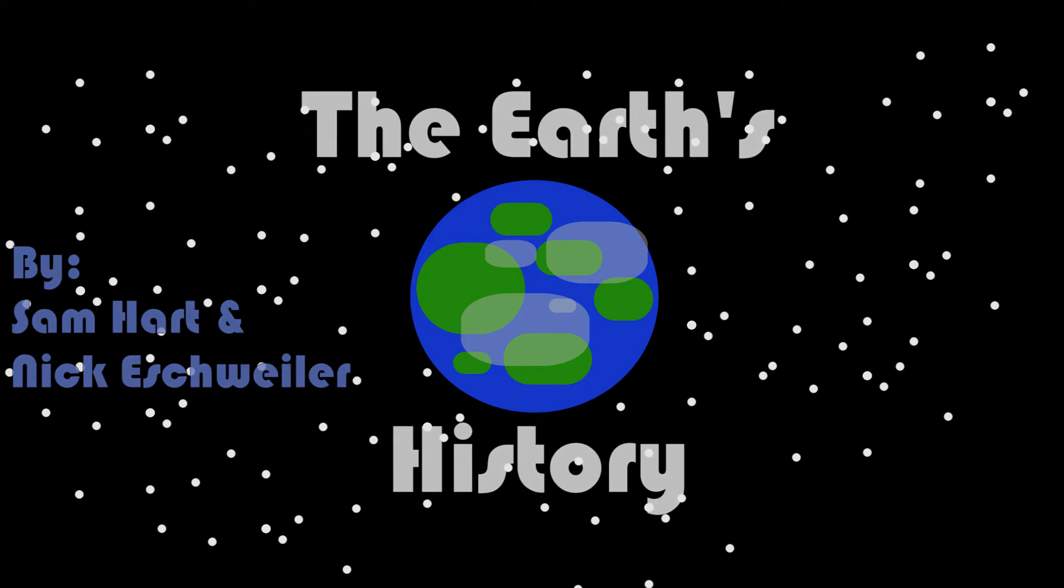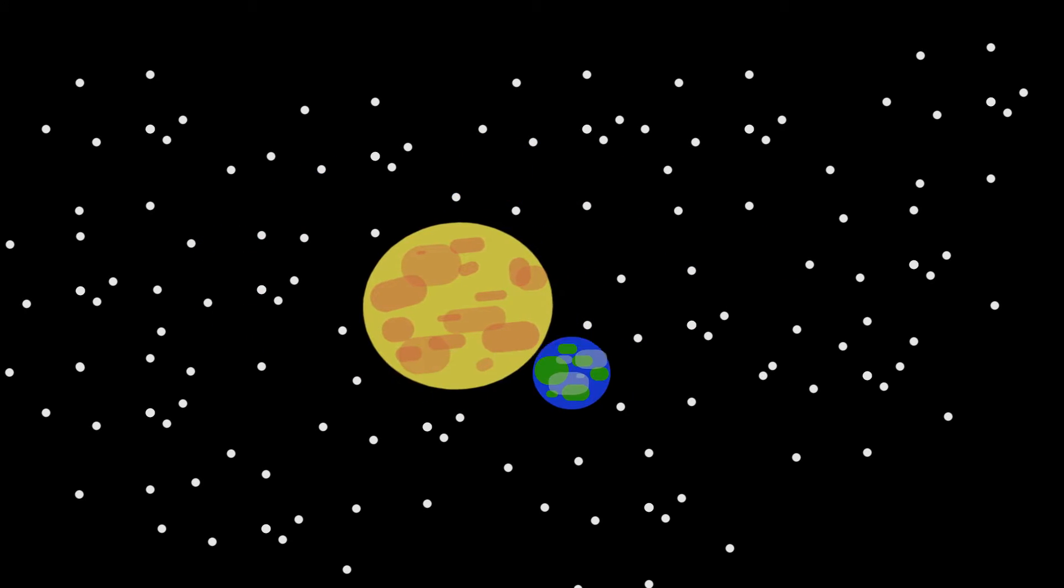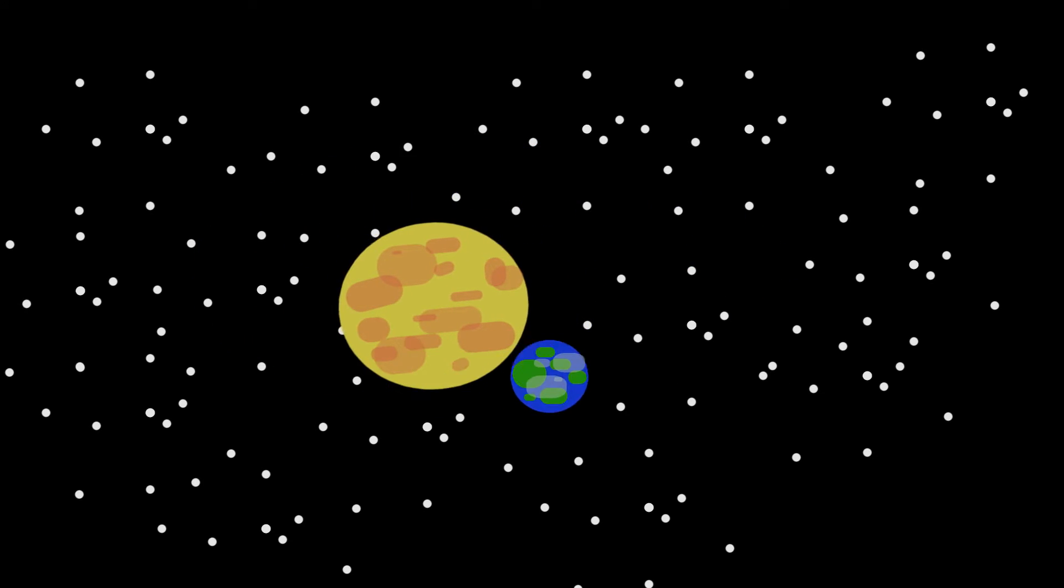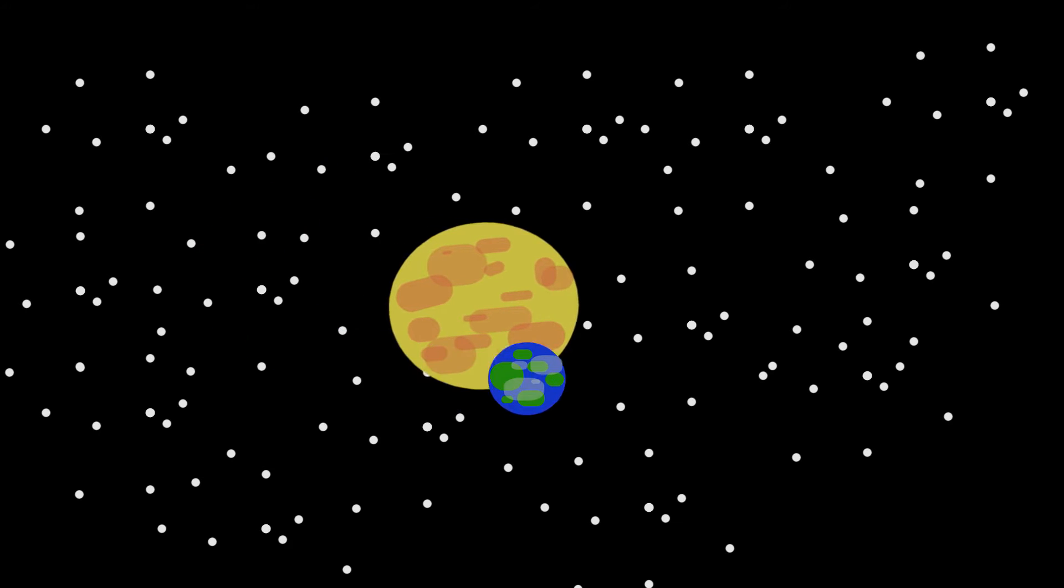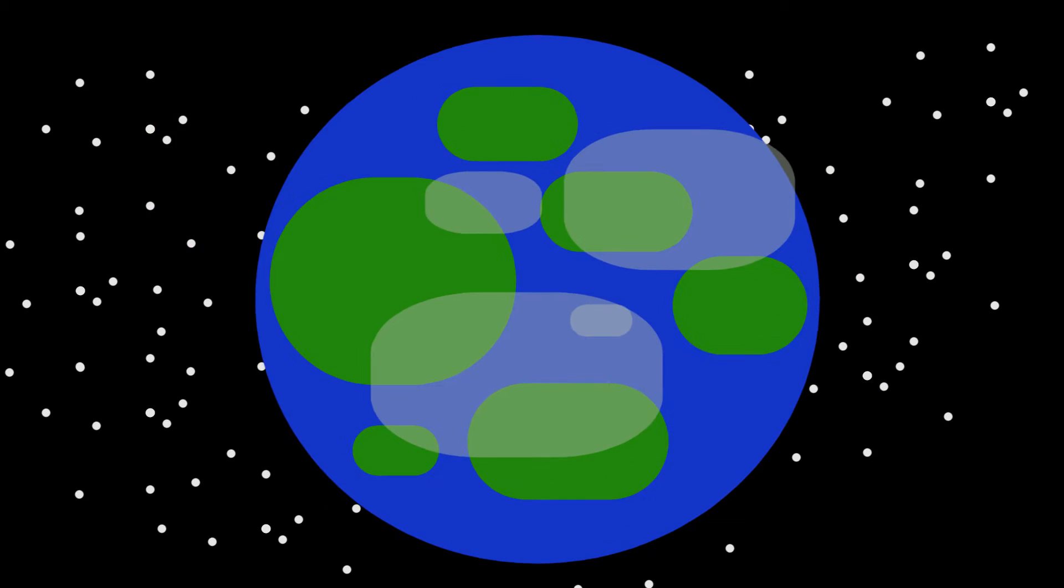The Earth. Our home planet. It contains a strong atmosphere, oceans, mountains, and life. But how did this spectacular planet form?